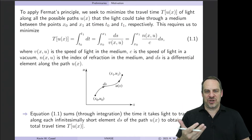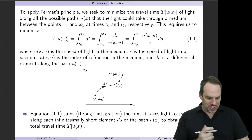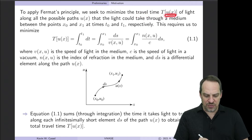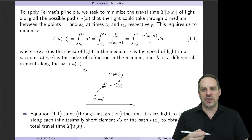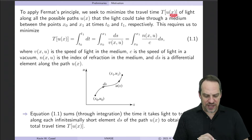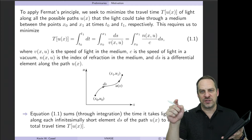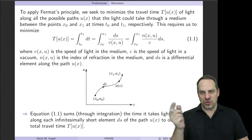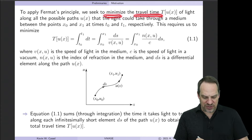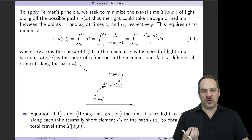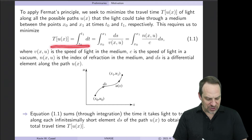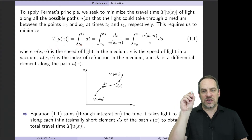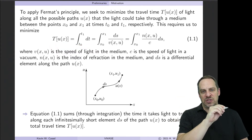Let's take the most natural mathematical expression of Fermat's principle. We want to determine the travel time, denoted capital T, which depends on the path of the light, defined as u of x. u is our dependent variable representing the path of the light; x is our independent variable representing the location. You have two points, x0 and x1, with u0 and u1, and you want to determine the path u(x) that minimizes the travel time T. Capital T is just the integral of dt, from t0 to t1 — integrating all the little differential segments of time along the path gives the total travel time.